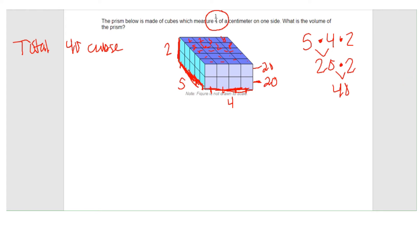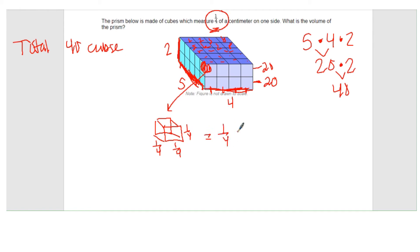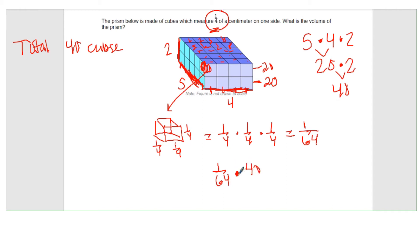You can use the total number of cubes to find the volume. If you pull out one small cube, it has an edge length of one fourth. Since the cube has all equal sides, the length, width, and height are each one fourth. So if I find the volume of this one cube, I multiply one fourth times one fourth times one fourth, which gives me one sixty-fourth. Each of the 40 cubes has a volume of one sixty-fourth, so I multiply one sixty-fourth by 40 to figure out the volume of the prism.